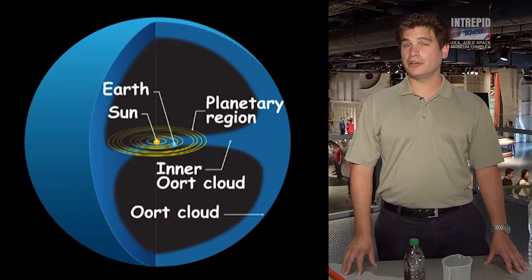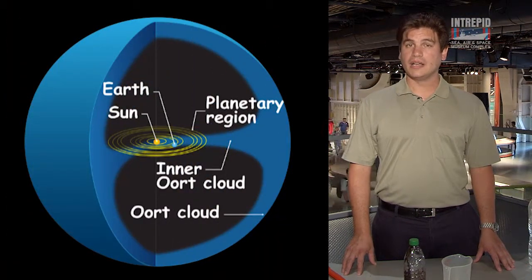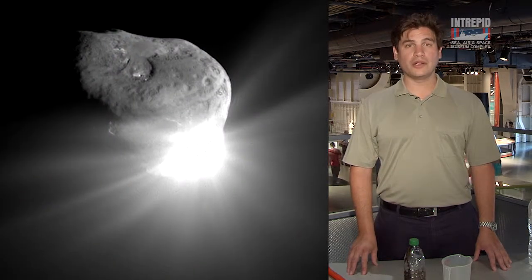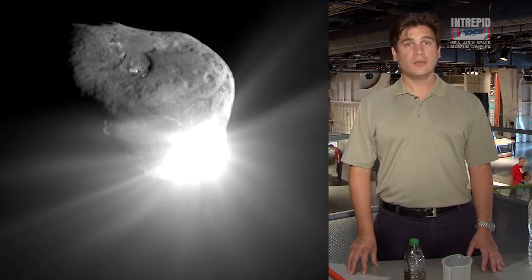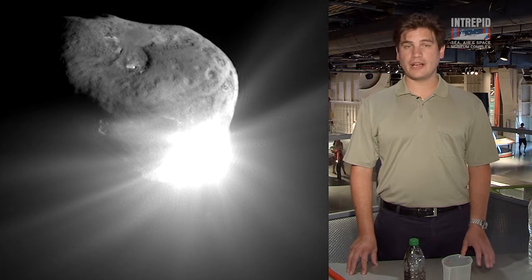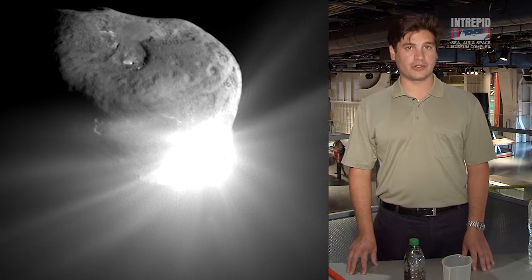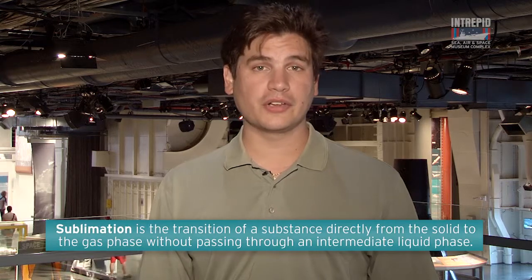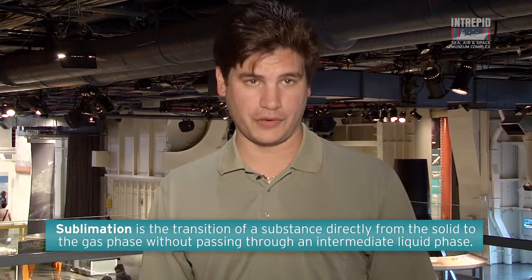Comets are leftover remnants from the early days of the solar system. Most comets exist at the outer edges of the solar system in a place that we call the Oort Cloud. Sometimes comets will collide with each other, sending one careening toward the sun. When that happens, it becomes very bright in the sky and we can see it easily from the Earth. As the comet nears the sun, it begins to glow brightly through a process that we call sublimation. Our experiment today is going to recreate that process for you.